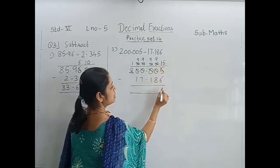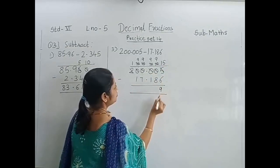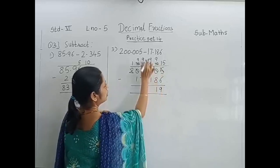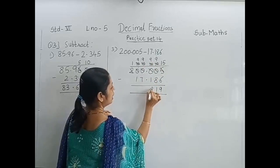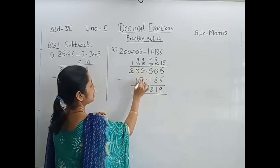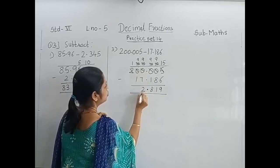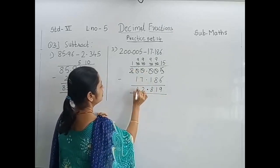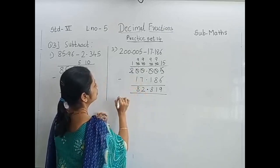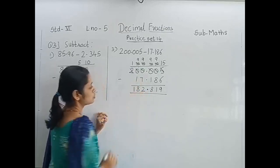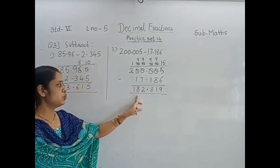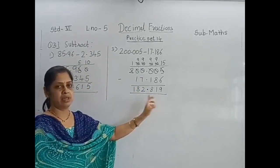15 minus 6 is 9. 9 minus 8 is 1. 9 minus 1 is 8. Put the decimal point. 9 minus 7 is 2. 9 minus 1 is 8. And 1 as it is. So the answer is 182.819.